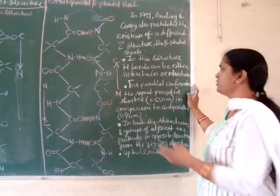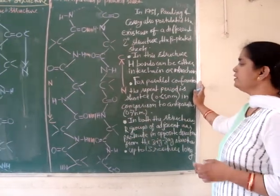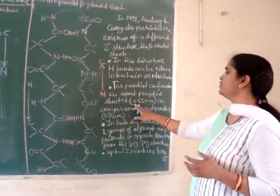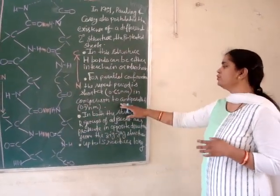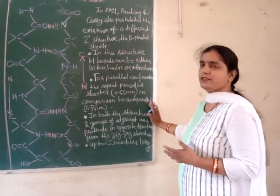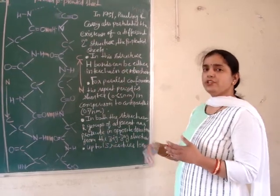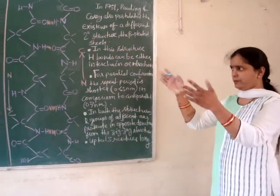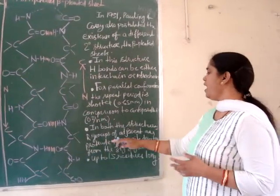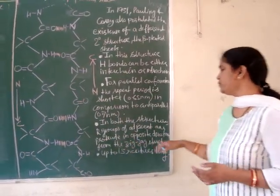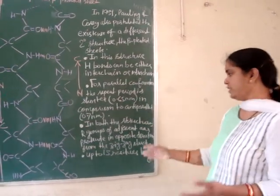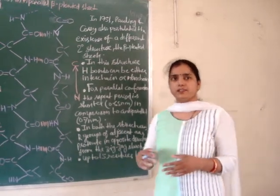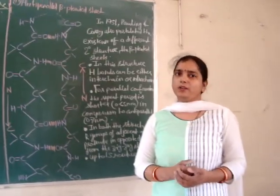In the parallel beta-pleated sheet conformation, the repeat period is shorter — the same position recurs after 0.65 nanometers — compared to the anti-parallel beta-pleated sheet where the repeat period is 0.7 nanometers. In both structures, the R-groups of adjacent amino acids project outward from the zigzag structure. Beta-pleated sheets can be up to 15 residues long.